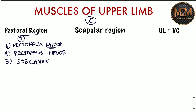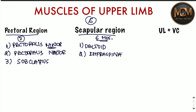Now let's talk about the scapular region. In the scapular region we have a total of six muscles. The first one is the deltoid muscle, the second one is infraspinatus, and the third one is supraspinatus.